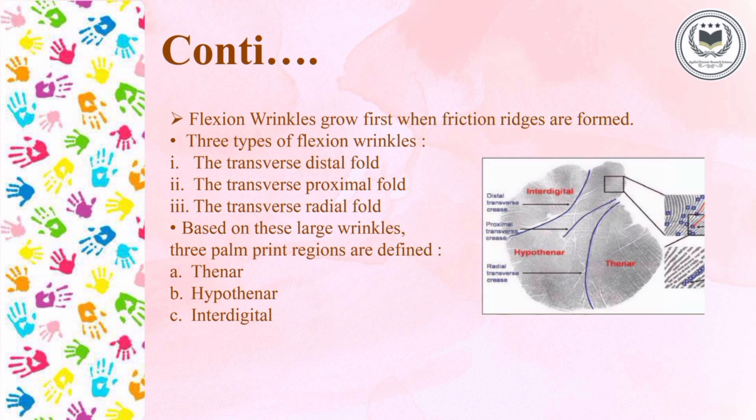Now we'll move to flexion wrinkles, which grow before friction ridges are formed. These are of three types: the transverse distal fold, the transverse proximal fold, and the transverse radial fold. Based on these three wrinkles, three regions are divided: the thenar, hypothenar, and interdigital region.